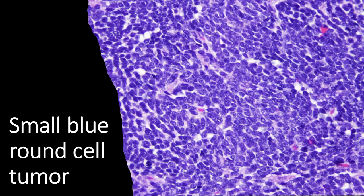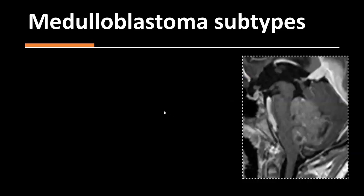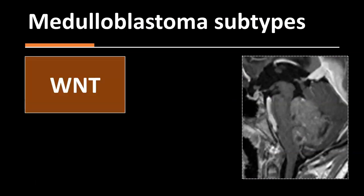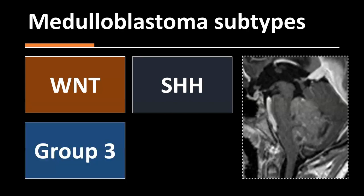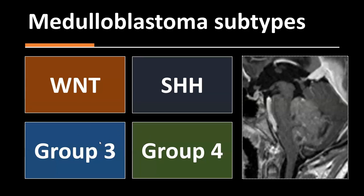Other small blue round cell tumors include lymphomas, Ewing sarcoma, and pineoblastomas — what they have in common is their microscopic appearance of many very small cells. Medulloblastoma has four subtypes based on molecular characteristics: the Wingless type (WNT), the Sonic Hedgehog type (SHH), and then Group 3 and Group 4. Groups 3 and 4 correspond mostly to the classic midline fourth ventricle tumor and have no defined molecular features yet.